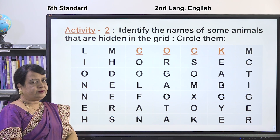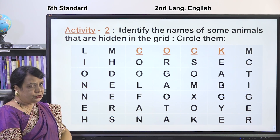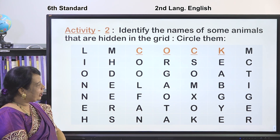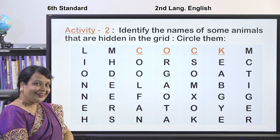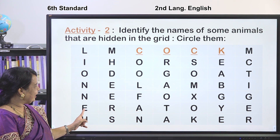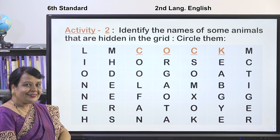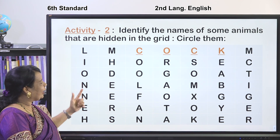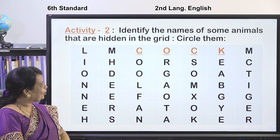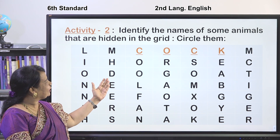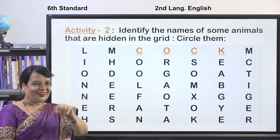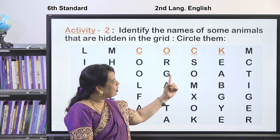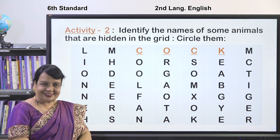Now find a few more animals. H-E-N — hen. L-I-O-N — lion. Which is the animal in the third line? It is a dog — D-O-G. There is one more: G-O-A-T — goat.